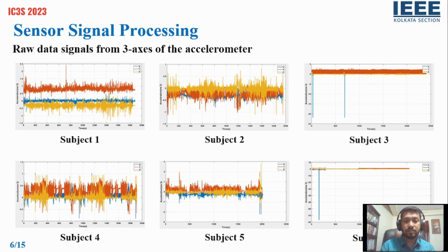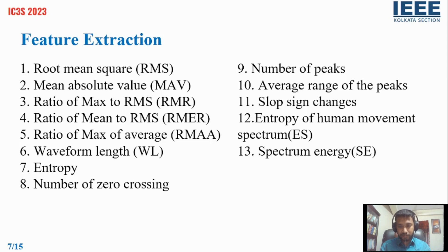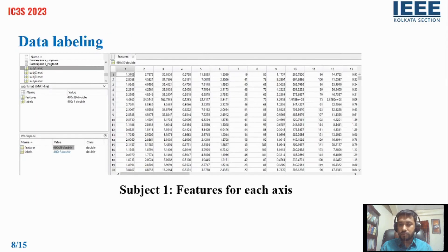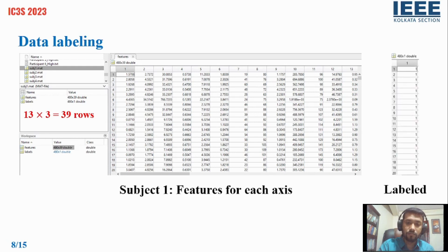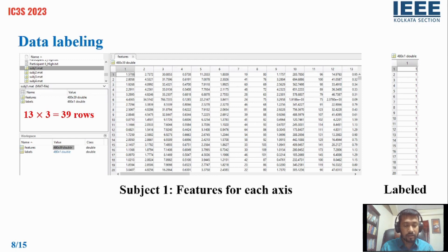These are the feature extractions we utilized to classify our model. This is the data labeling. As you can see, the columns are extracted features — there are 39 columns total. The accelerometer has three axes, and each axis extracts 13 features, giving 39 columns. We labelled the data with the help of the qualitative assessment of stress: one means the subject has no stress, and two means the subject has stress.